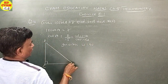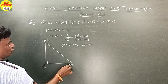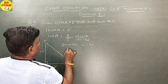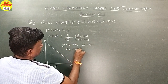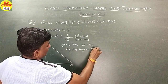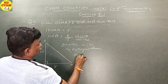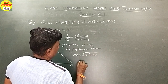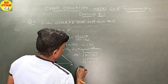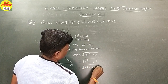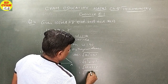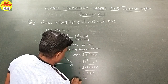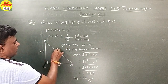Standing at angle A. By Pythagoras theorem, AB is equal to square root of AC square plus BC square. That is, square root of 8 squared plus 15 squared, equals square root of 64 plus 225, equals square root of 289, which equals 17. AB is equal to 17 centimeter.